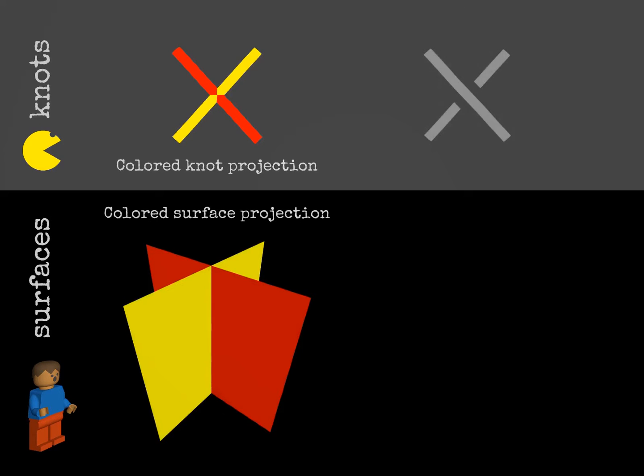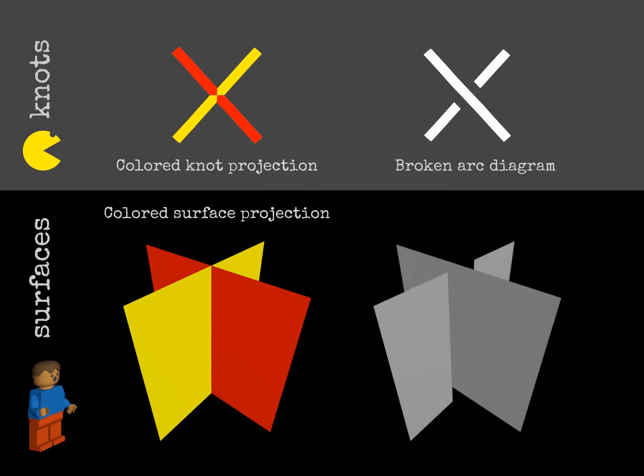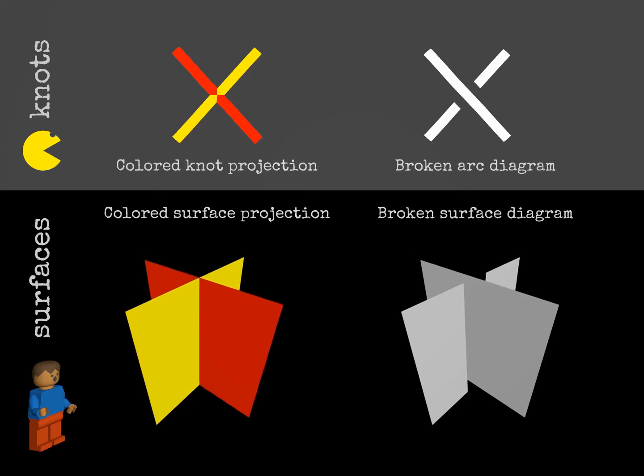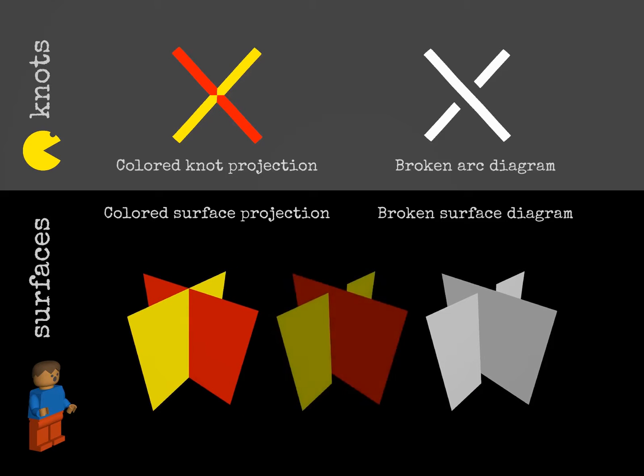We will see soon that there are also more complicated intersections for surfaces. Similarly to broken arc diagrams, we may use the broken surface notation. We remove a small piece of the lower surface along the line of intersection. Sometimes we use both conventions together to help distinguish the broken surface parts.